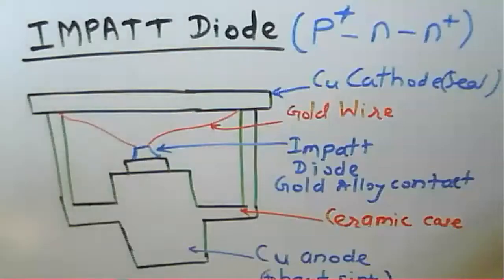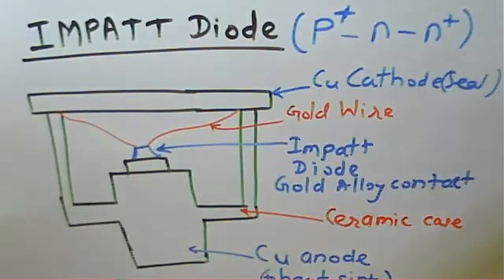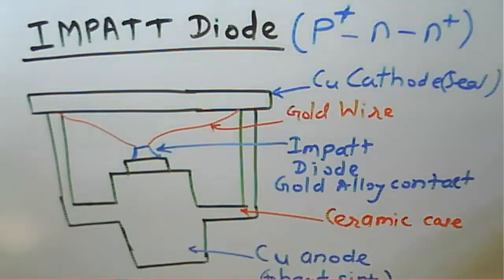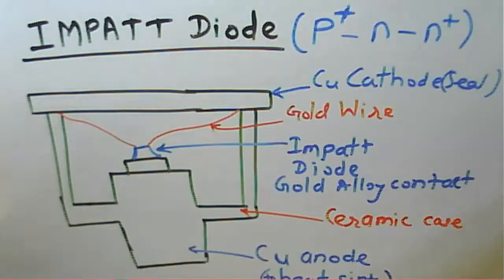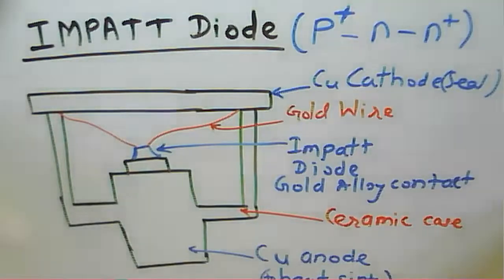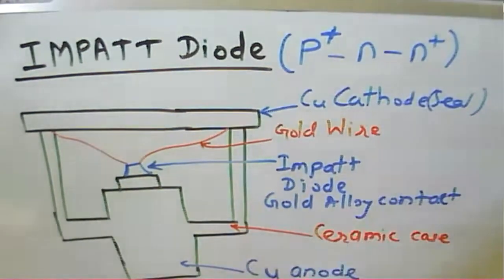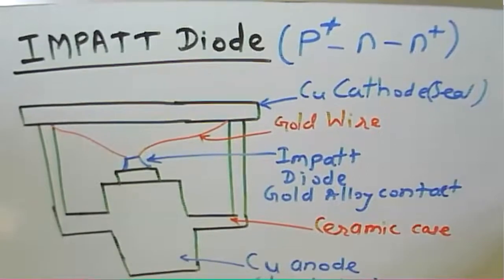Welcome to the microwave communication course. Today we start with the IMPATT diode. We have seen earlier the IMPATT diode and its family, including the READ diode. Now today we see the IMPATT diode, which is constructed through p+, n, and n+ material.